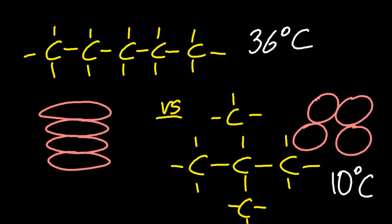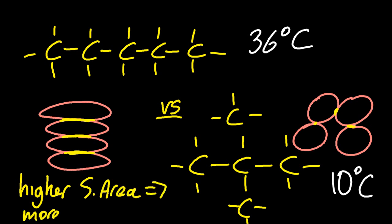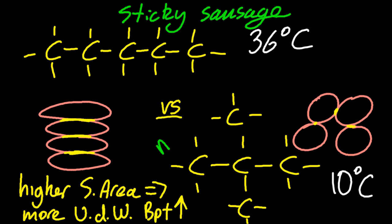Pentane is more like a sausage, and 2,2-dimethylpropane is more like a sphere. And in yellow, I've highlighted the overlap of these molecules, van der Waals bonding. So the higher the surface area, the more van der Waals bonding, and the higher the boiling point. Now, how can you remember that, that the surface area is important? Well, just remember sticky sausage and non-sticky balls. That will probably stick in your head.